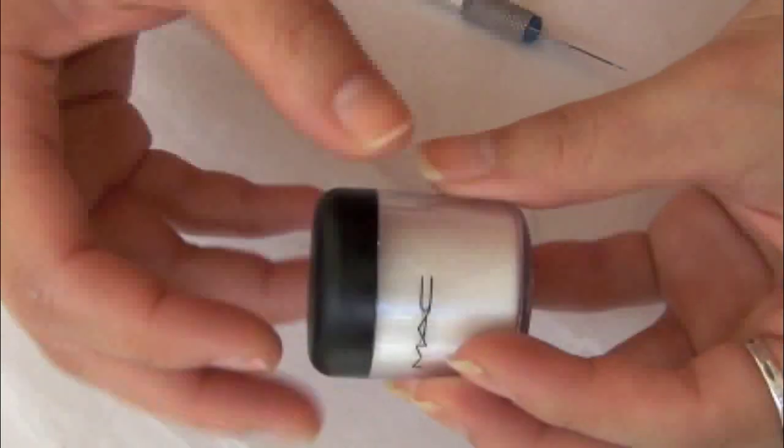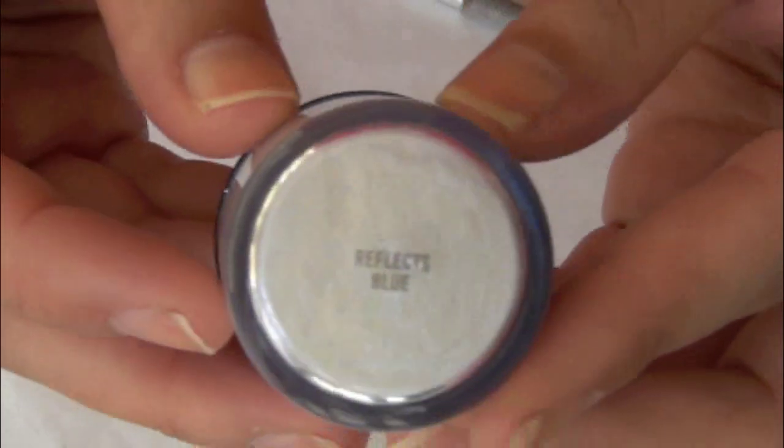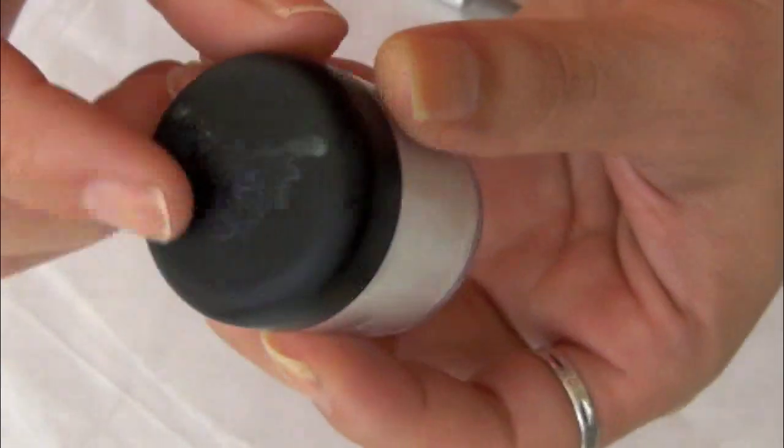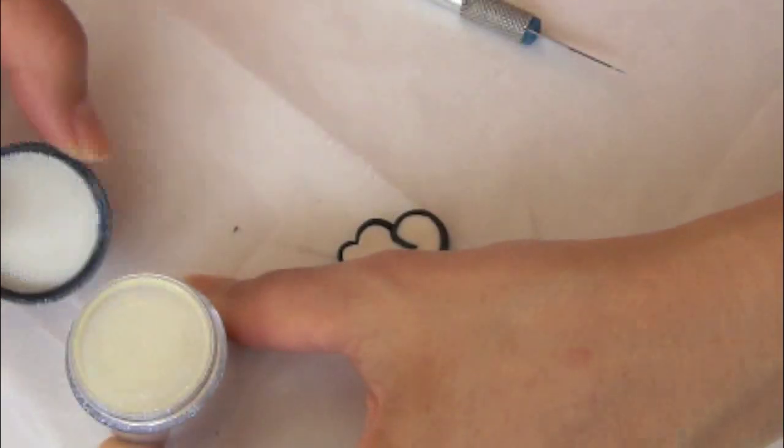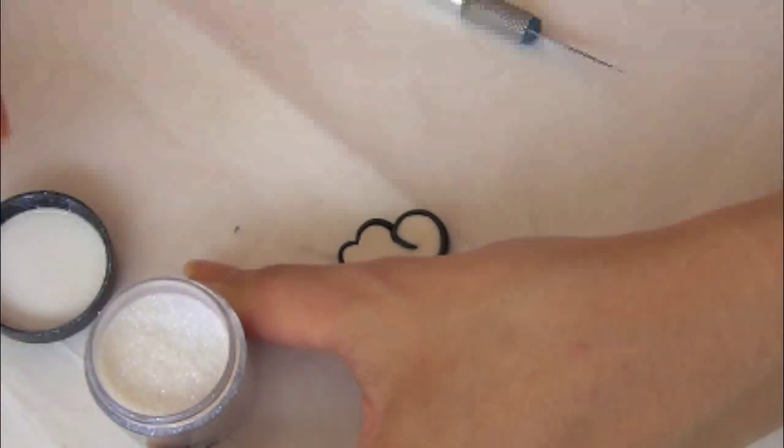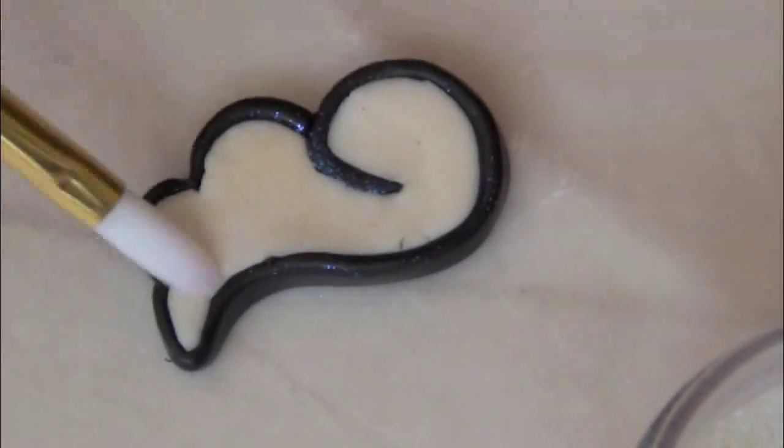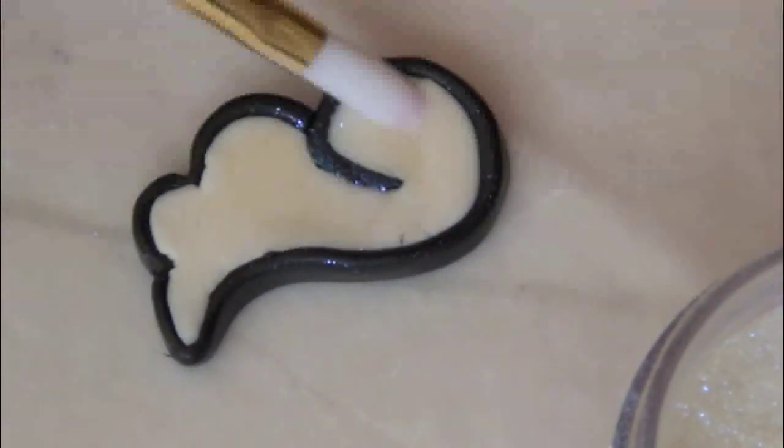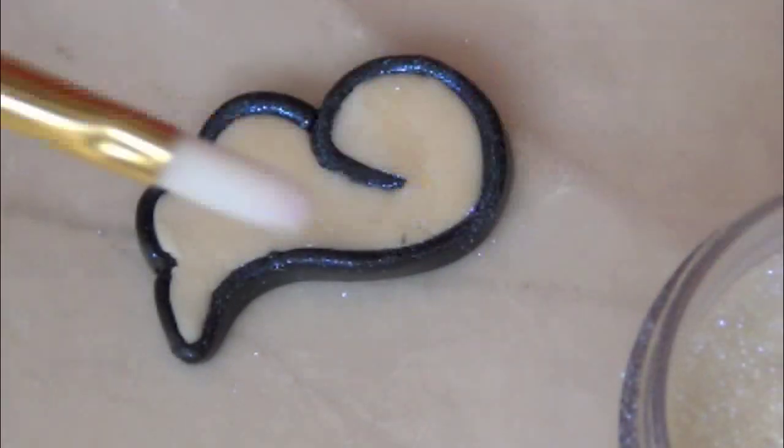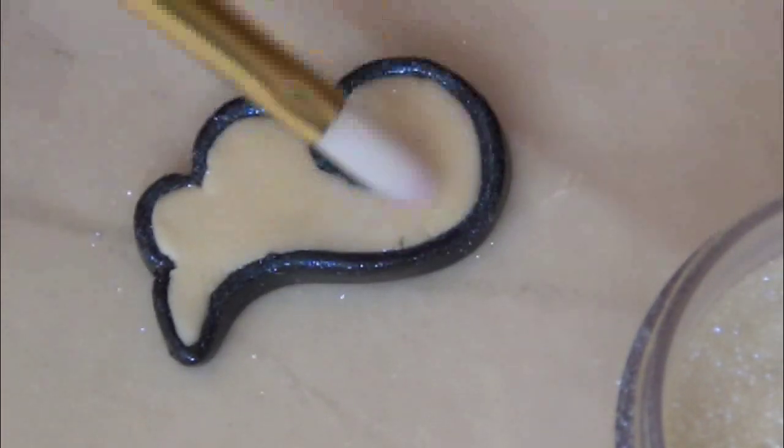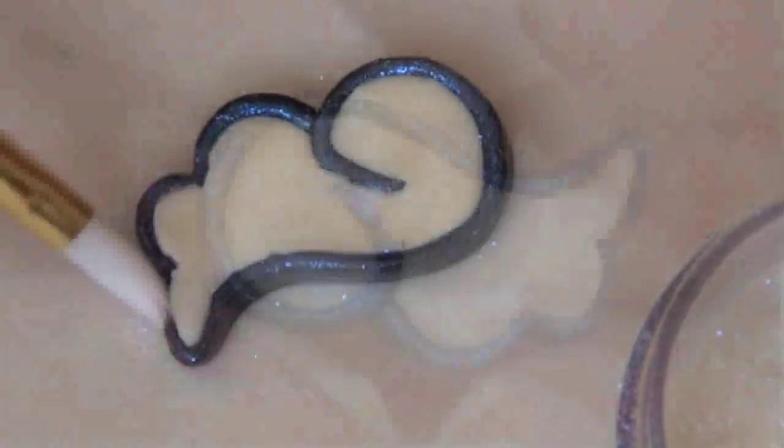And this step is really optional. This is a makeup pigment from MAC. The only reason I'm using this is because I want to use it on something. I had this for so many years and I didn't even use it once. It's a very pretty iridescent blue color, especially if it's laid on top of a black background as you can see right there. And I also want to see if makeup works on polymer clay.